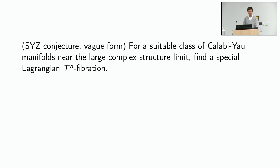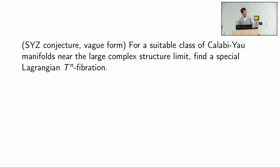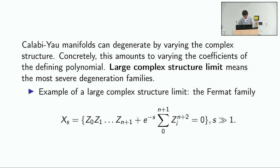A large complex structure limit is a way to fix essentially the Kähler class and vary the complex structure by changing the coefficients of the polynomial so the equation becomes quite singular in the limit. The question is really about trying to understand what happens to the metrics in this limit. The intuition of the large complex structure limit is that the complex structure degeneration is as severe as possible.